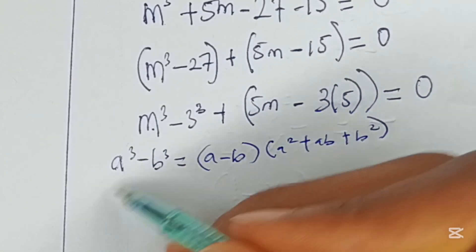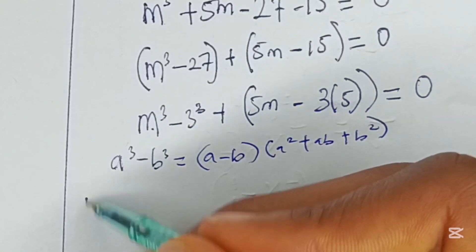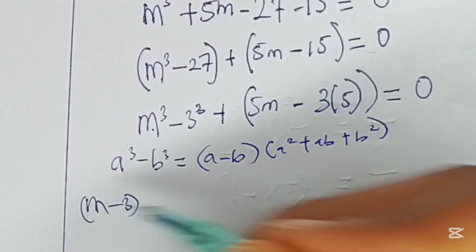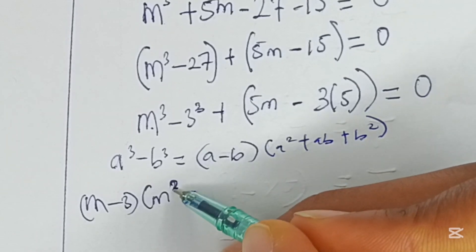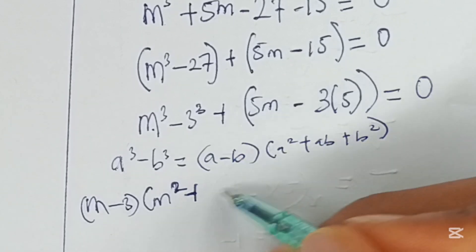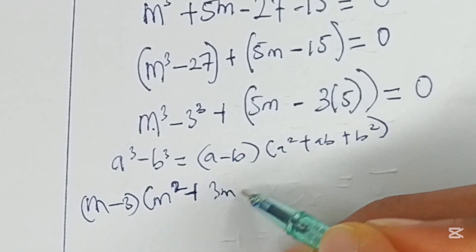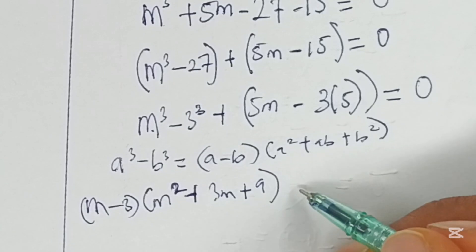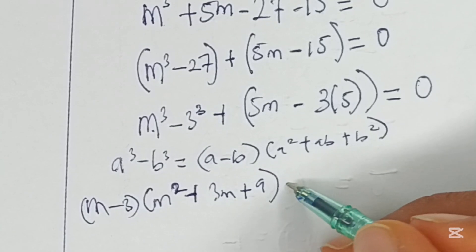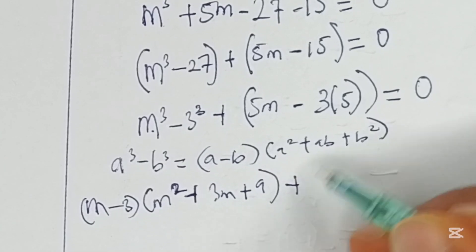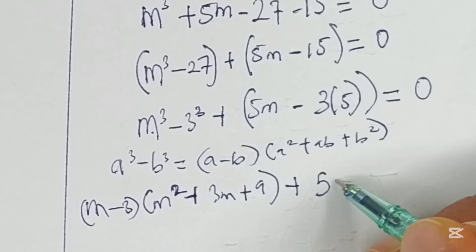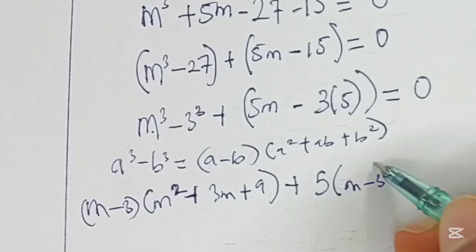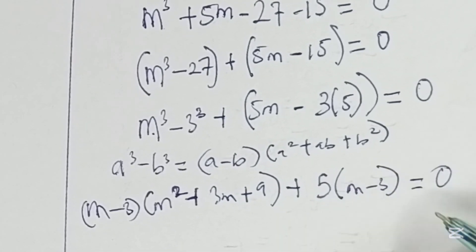Hence, we're going to have from here m minus 3 into m squared plus 3m plus 9. Now this will be plus, factoring out 5 from here, 5 into m minus 3 is equal to 0.